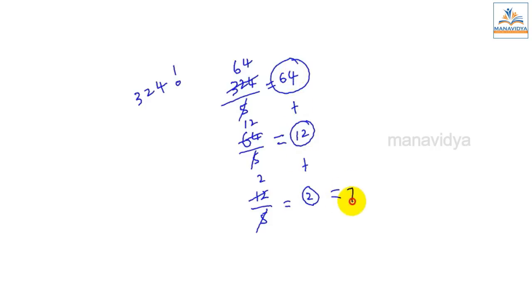Now we add: 64 plus 12 equals 76, plus 2 equals 78 zeros. So 324 factorial has 78 zeros.